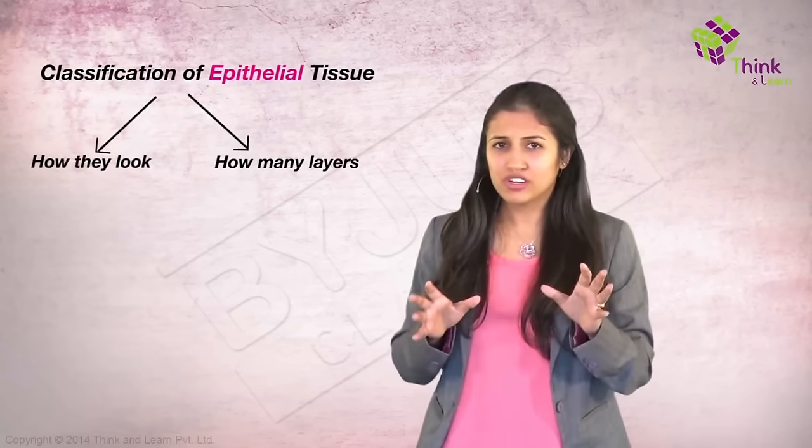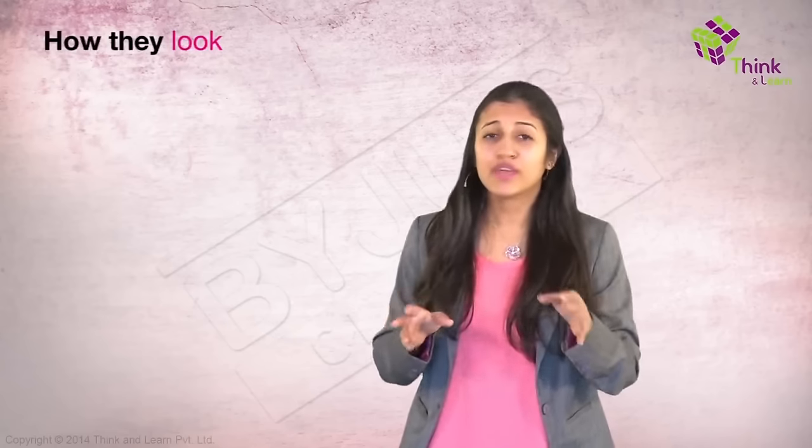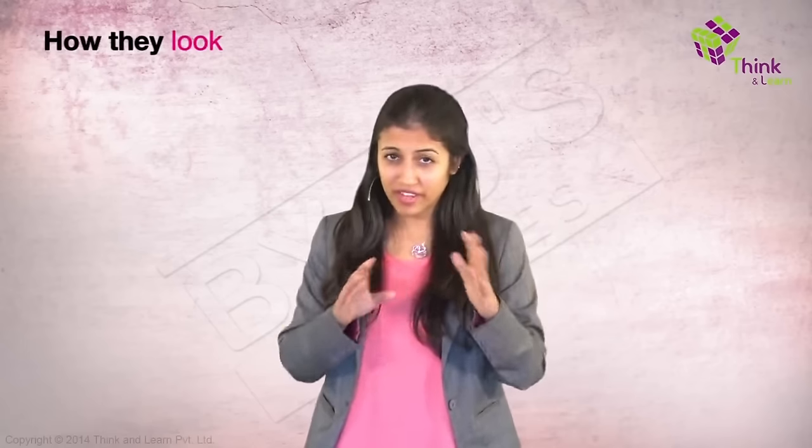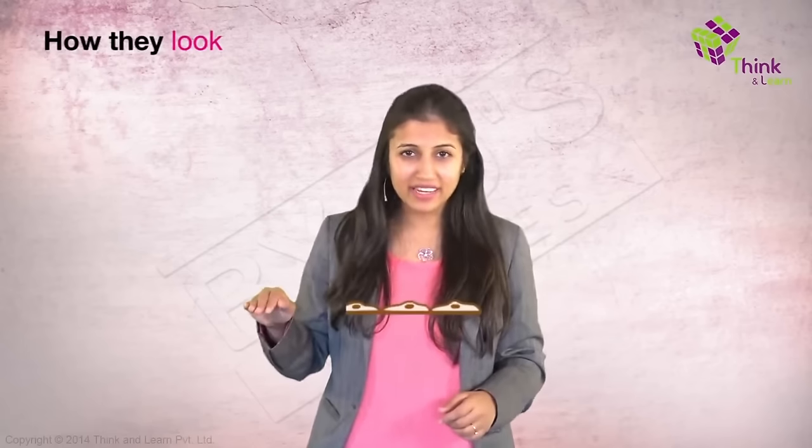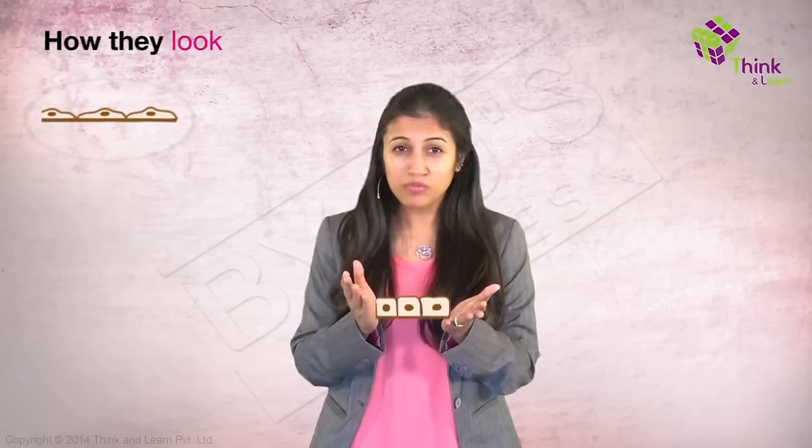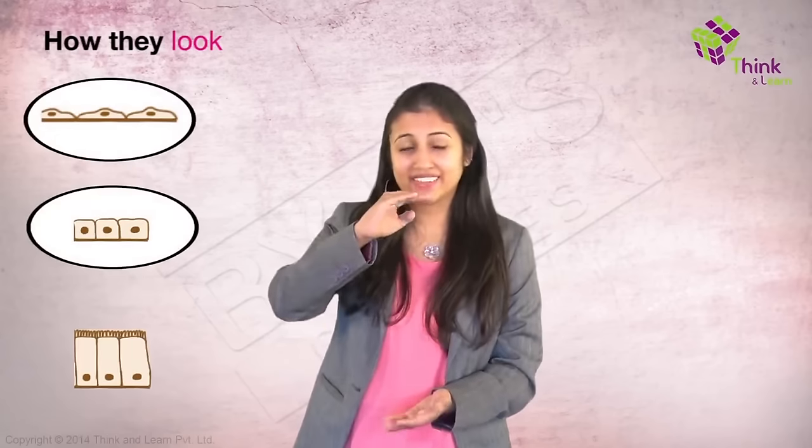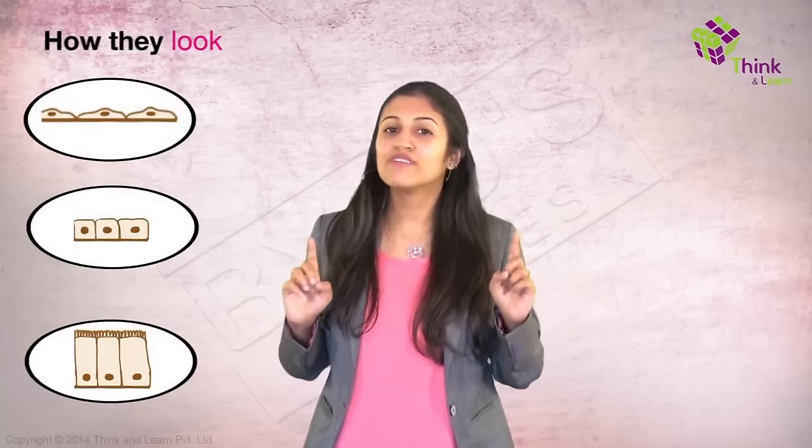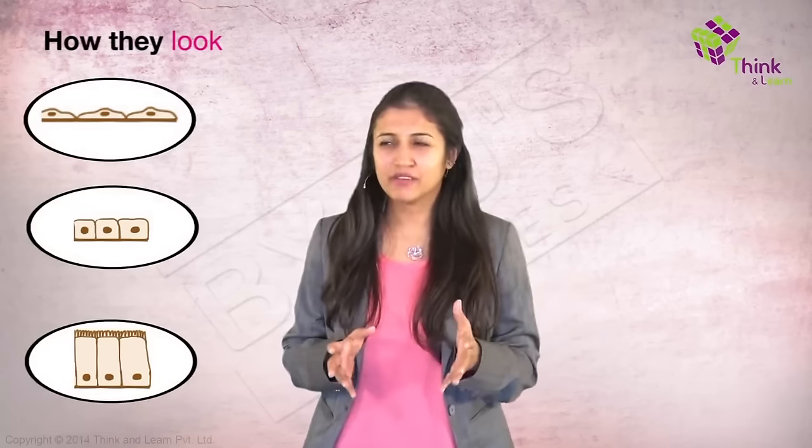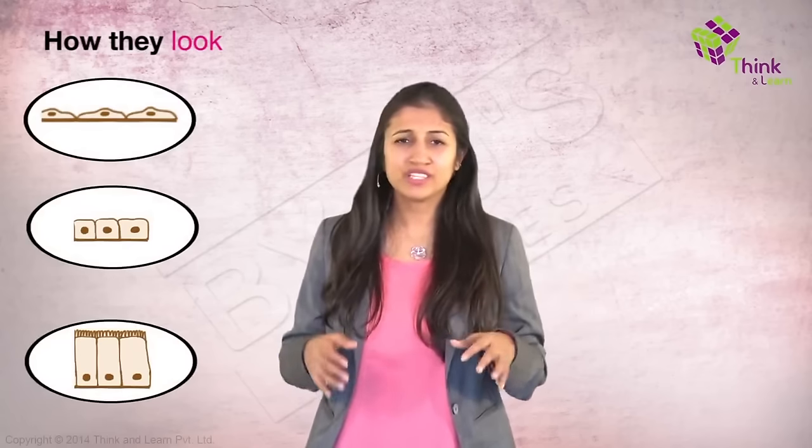Based on how they look, they can be just three of them. Very simple, very easy. They can be like a line, they can be like a cube, or they can be like a cylinder. That's it. Only the one which looks like a line has a funny name, a weird name actually. Squamous.